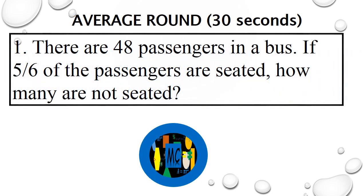Question 1. There are 48 passengers in a bus. If 5 sixths of the passengers are seated, how many are not seated?